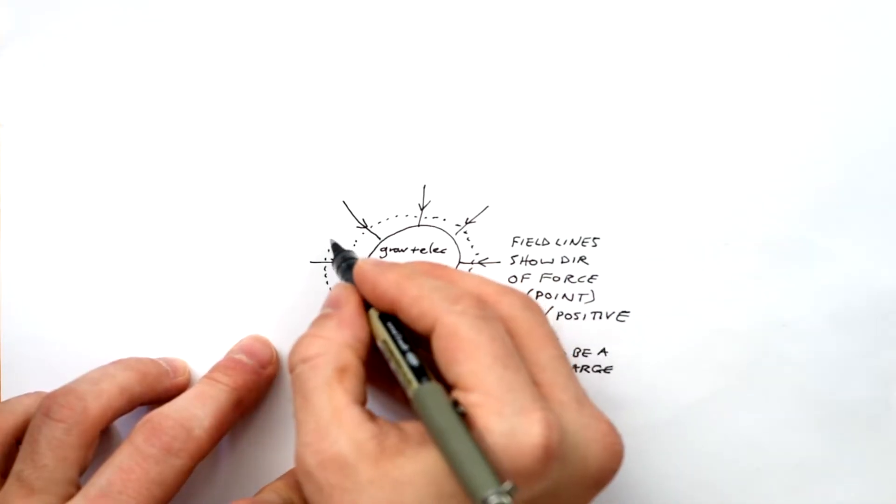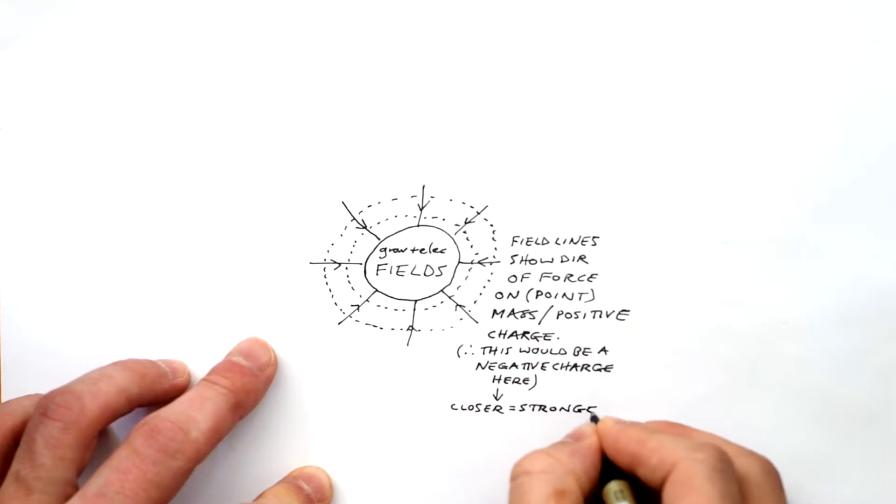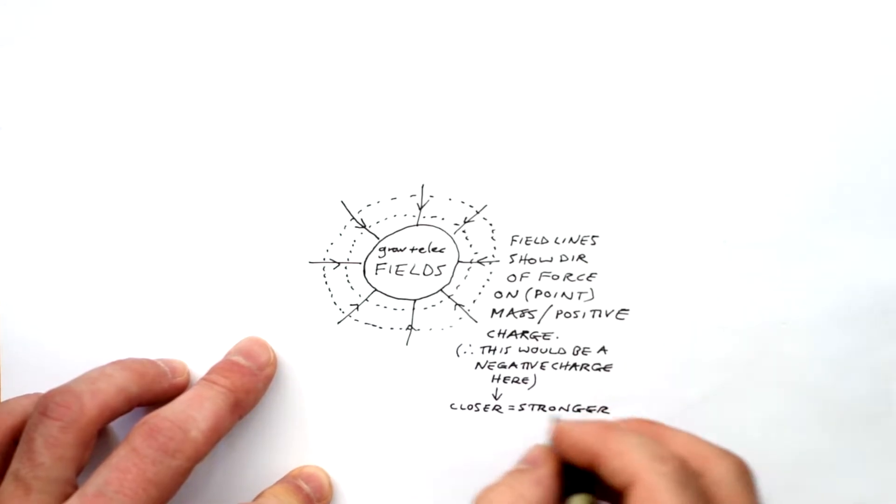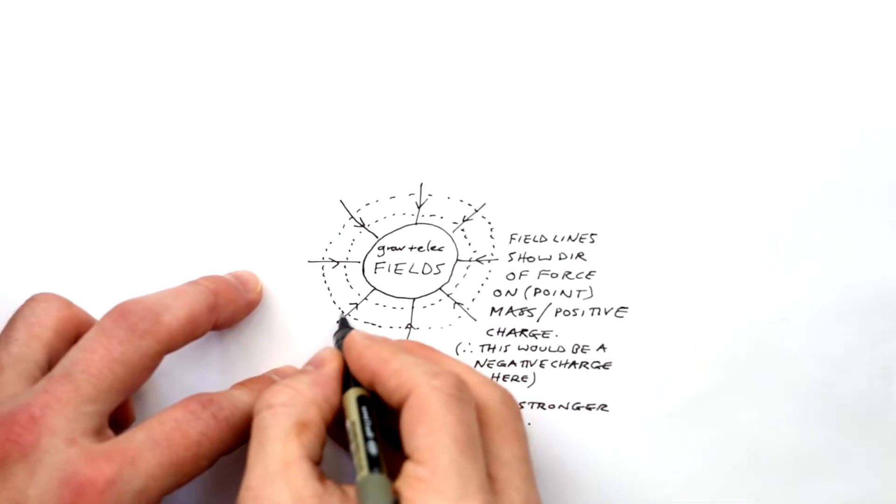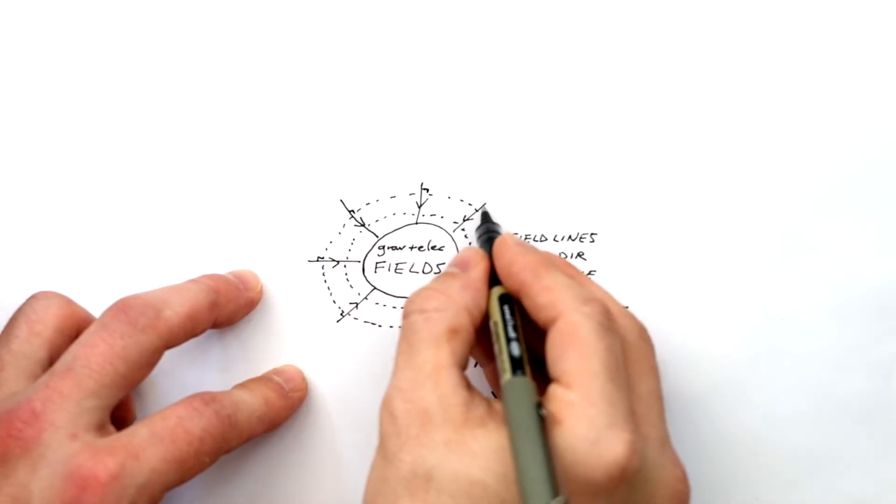The field is getting stronger as we get closer to the planet or whatever. And we can tell because the field lines are getting closer together. Equipotentials and field lines always cross perpendicular to each other. I'm just putting in some right angles here.